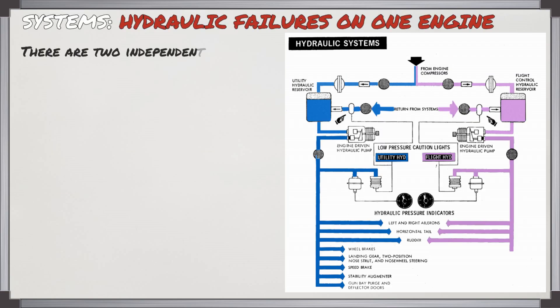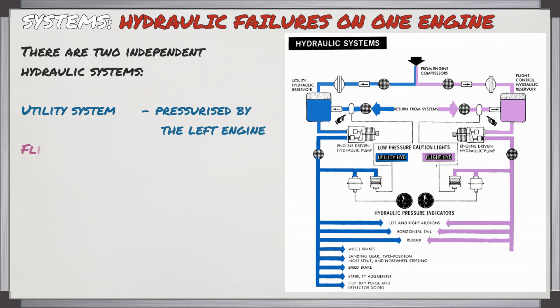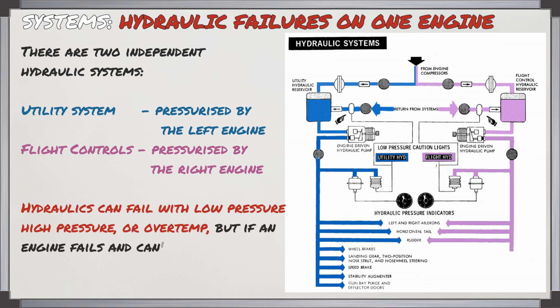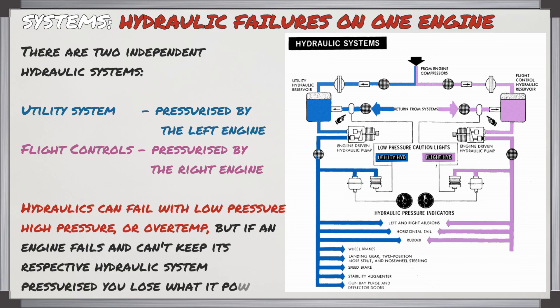When you're flying on a single engine the biggest issue you're going to have to deal with is the loss of a hydraulic system and what ends up resulting from that. There are two independent hydraulic systems in the F5: a utility system pressurized by the left engine, and flight controls pressurized by the right engine. The hydraulics can fail with either low pressure, high pressure, or an over-temperature condition, but if you have an engine failure that can't keep its respective hydraulic system pressurized, you end up losing what that system powers.